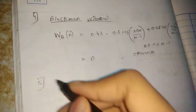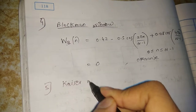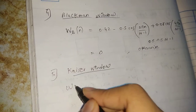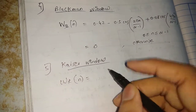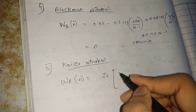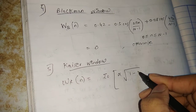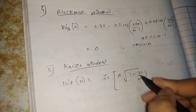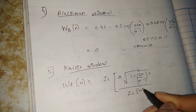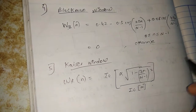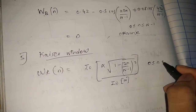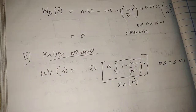The fifth and last window is the Kaiser window. These are the five window techniques and we are discussing their equations. The Kaiser window is: w(n) = I₀(α √(1 − (2n/(N−1))²)) / I₀(α). The range is the same for all windows: 0 ≤ n ≤ N−1, and equals 0 otherwise.